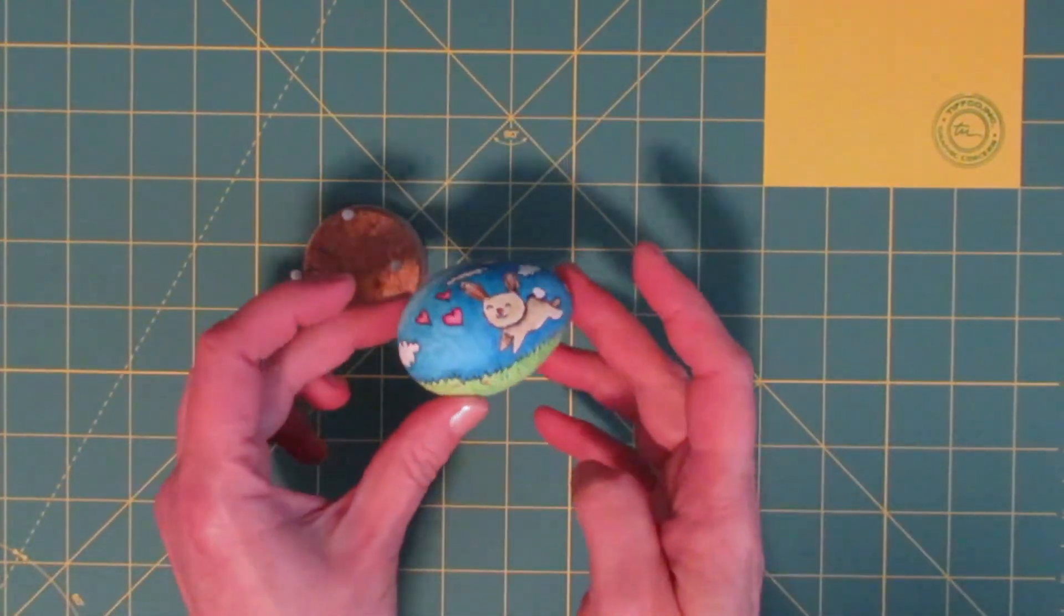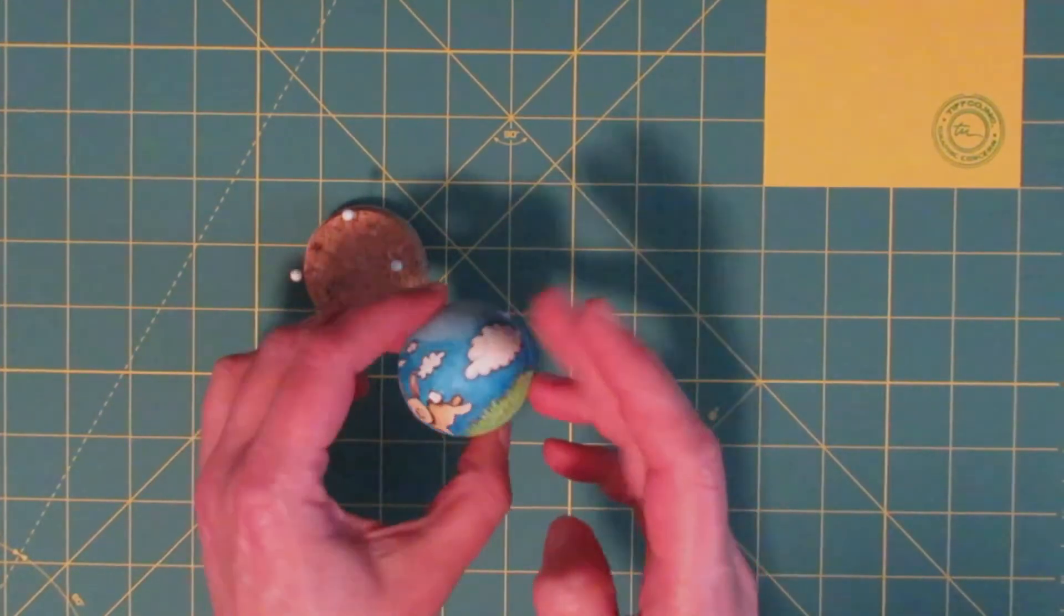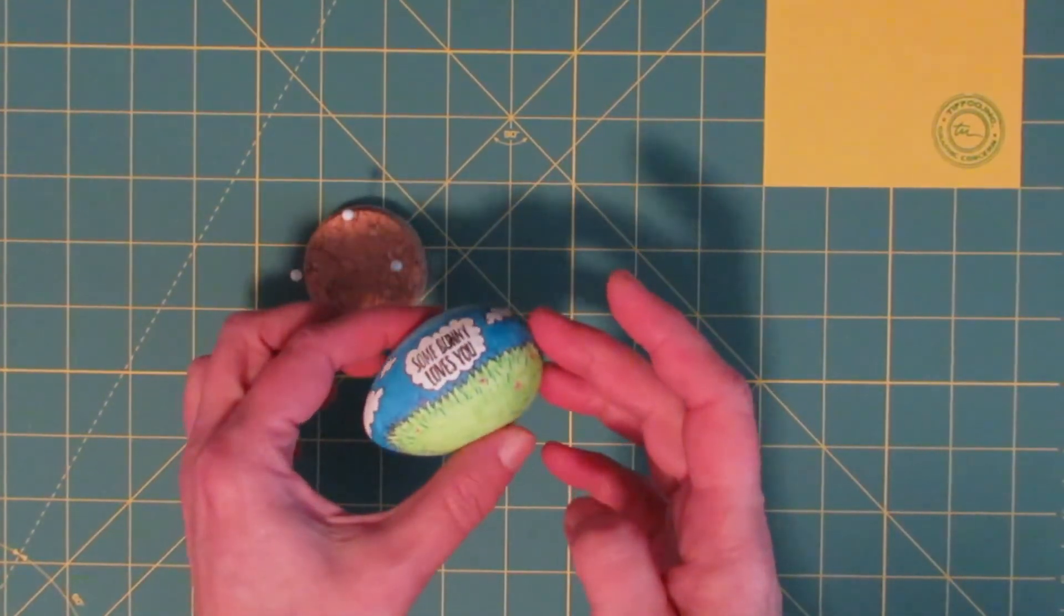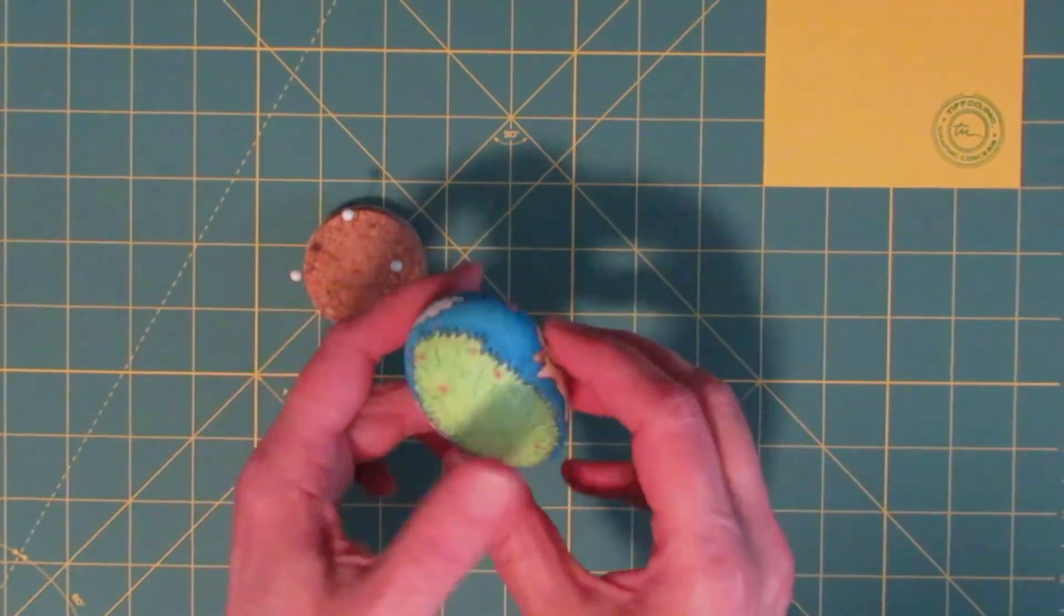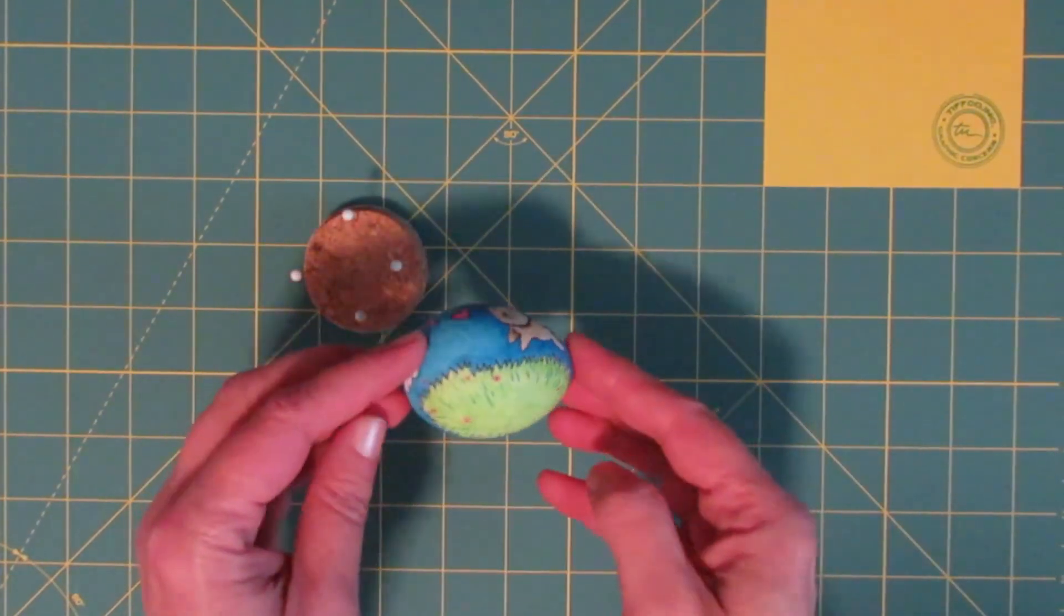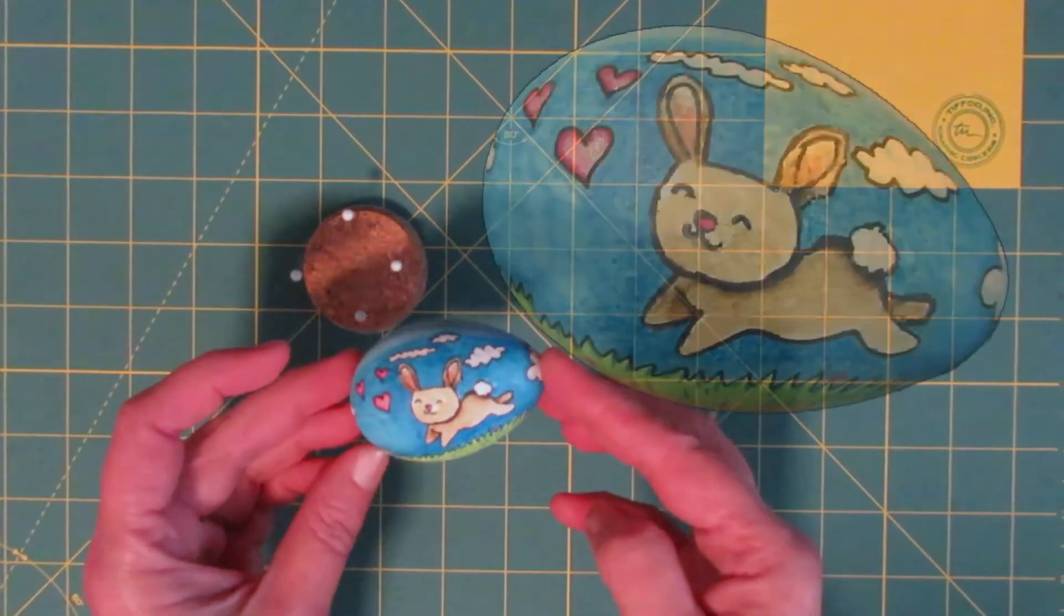And here's my finished egg. I added a little bit of sparkle with a glue pen and some foil, and I'm pretty happy with how this all turned out. I think I'm going to give this egg to my nephew for Easter this year.